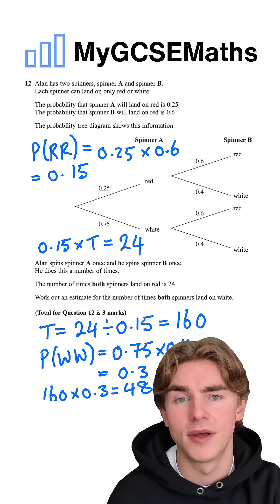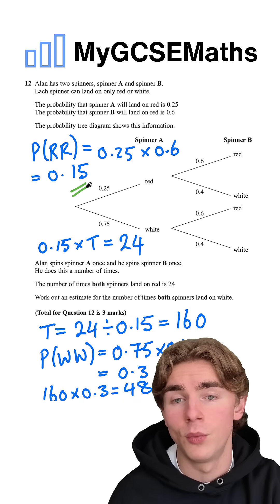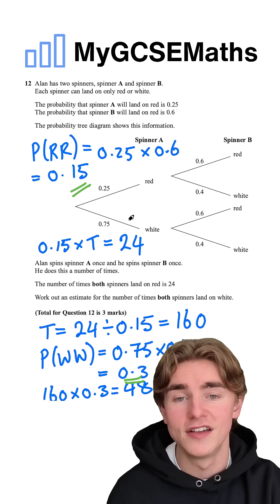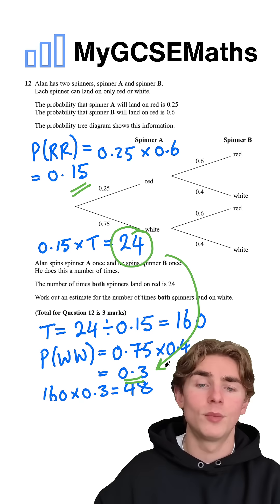I'm just thinking another way to do that, a handy trick, would be to recognize that the probability of red, red, which is 0.15, is half the probability of white, white, which is 0.3. So we could actually just double that number, the 24. But either way, it's going to end up with the same conclusion.